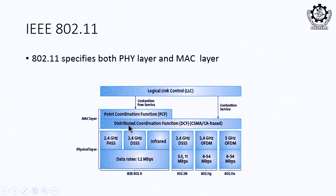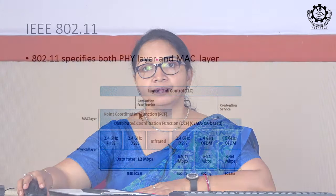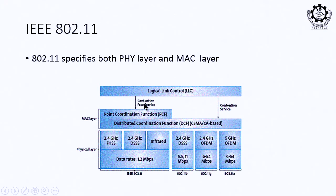Above the physical layer is the MAC layer, which has two kinds of functions: one is the distributed coordination function (DCF) and another is the point coordination function (PCF). The DCF is contention-based — every node executes the MAC protocol algorithm to get the channel. In the PCF, a central agent decides who gets the channel next, making it a polling-type or contention-free protocol.